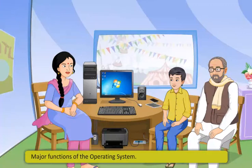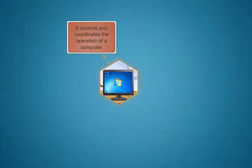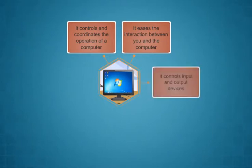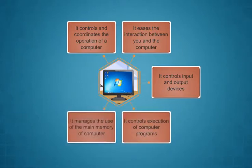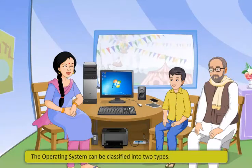The major functions of the operating system are: it controls and coordinates the operation of a computer; it eases the interaction between you and the computer; it controls input and output devices; it controls execution of computer programs; it manages the use of the main memory of the computer; and it helps you to manage and manipulate files.